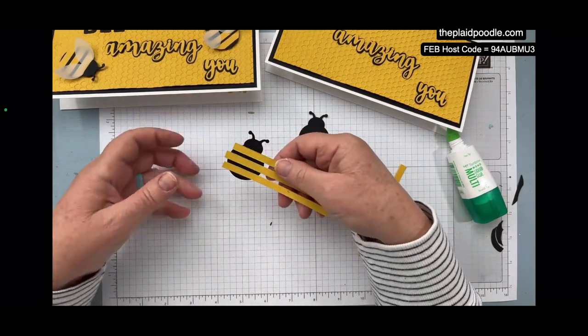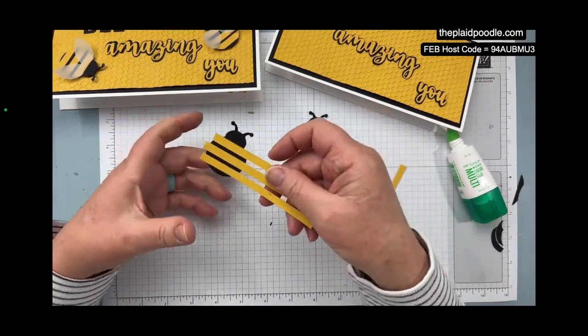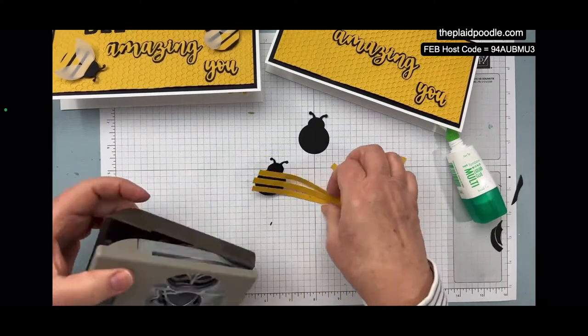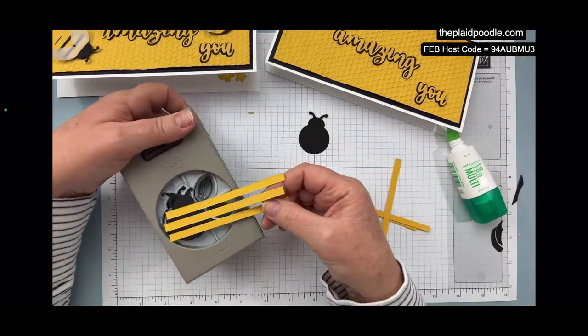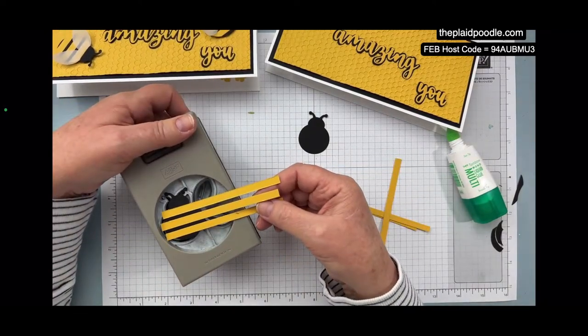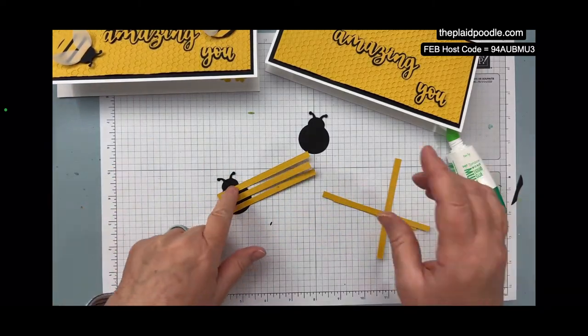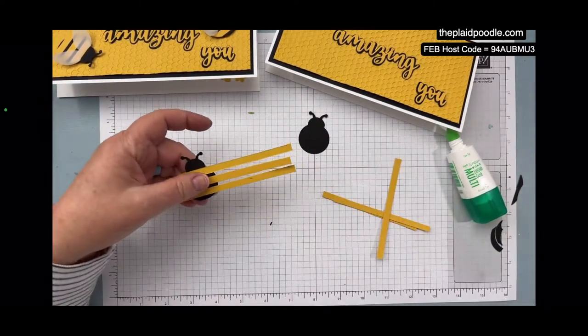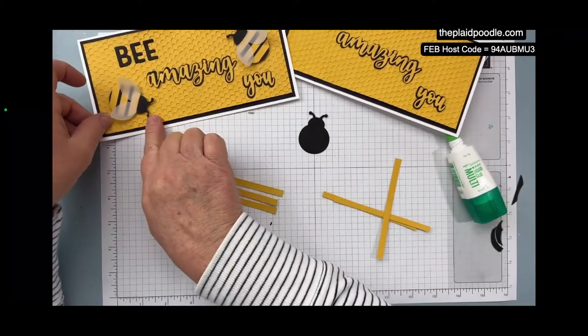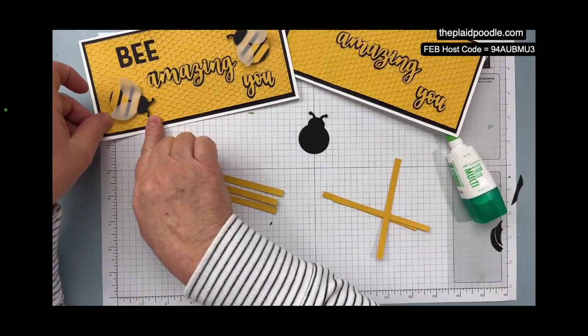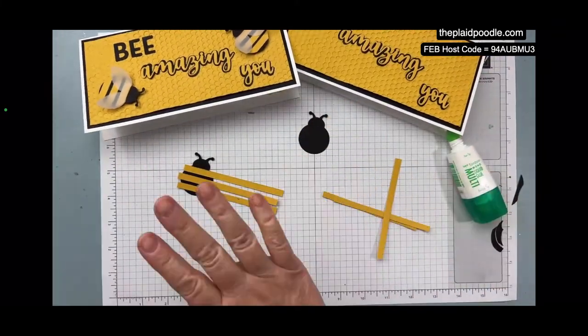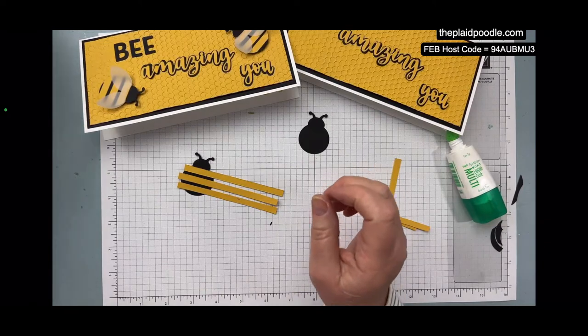It's going to dry clear anyway. Now you can take your scissors and trim that off, or you can try and get it back in the punch. But I'm worried I'm going to cut my antennas off. I did do that with this one. I re-punched it. You have to be real careful.